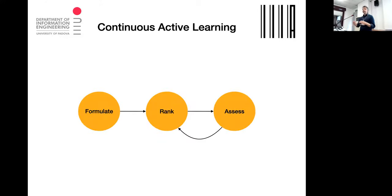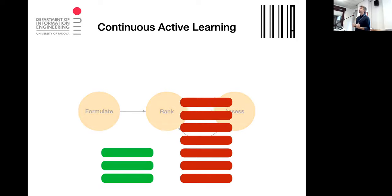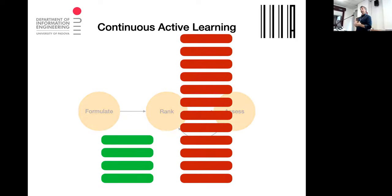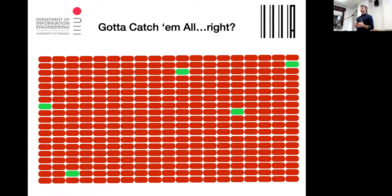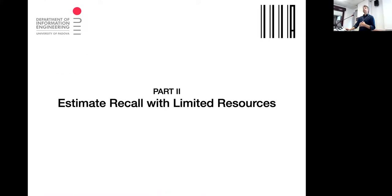So the main idea is: formulate a query, rank the remaining documents in the collection, assess them, give feedback, and continue — until you've caught them all. That's the problem: when do we stop? Continuous active learning retrains the model according to immediate relevance feedback. The challenge is knowing that you've obtained most of the relevant objects in the collection.